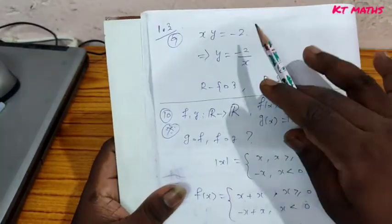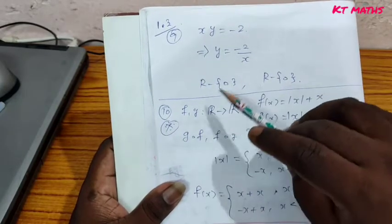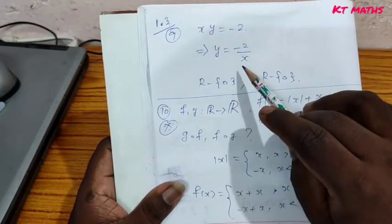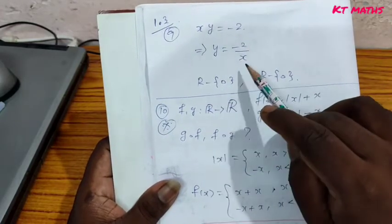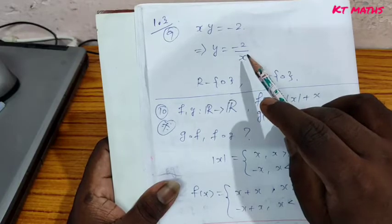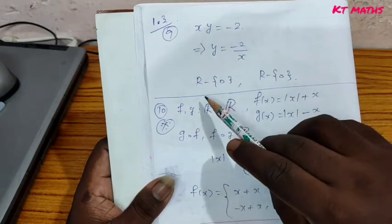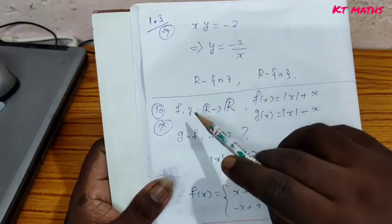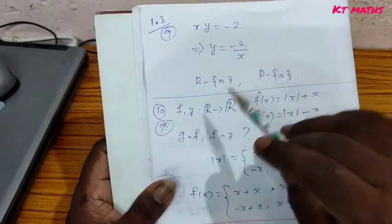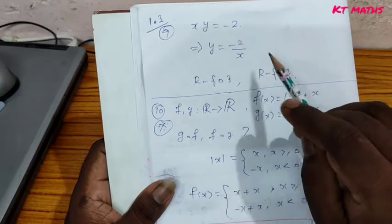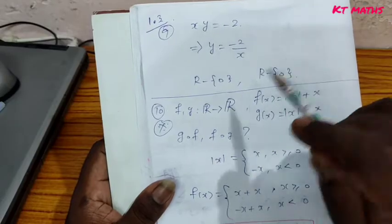So xy equal to minus 2, therefore y equal to minus 2 by x. The function is undefined at x equal to 0. So R minus {0} is the domain of the function. Since no x gives y equal to 0, R minus {0} is also the range of the function.